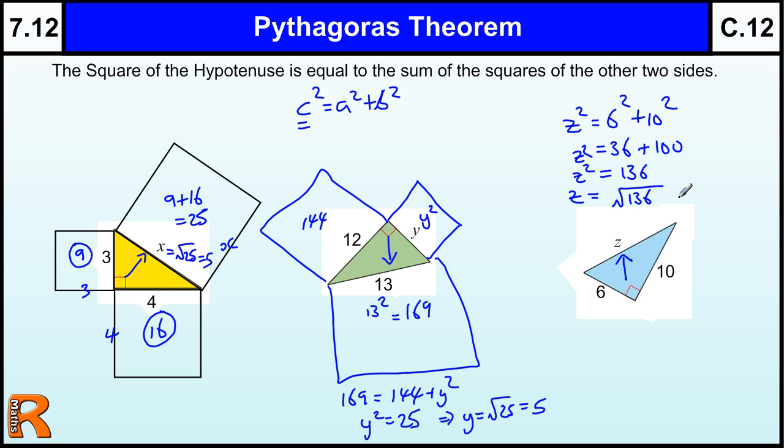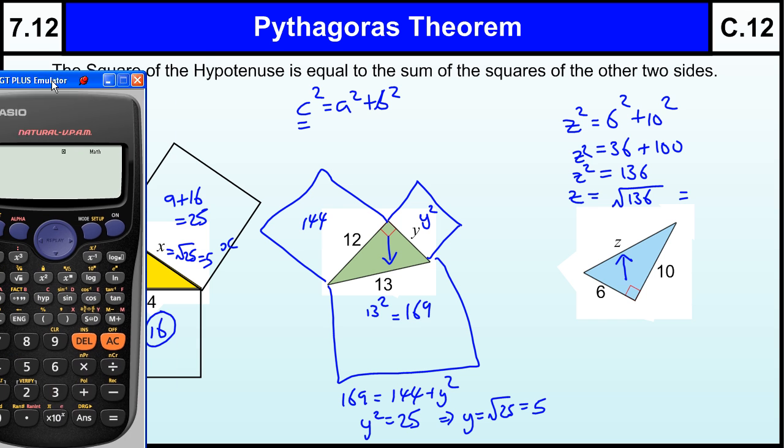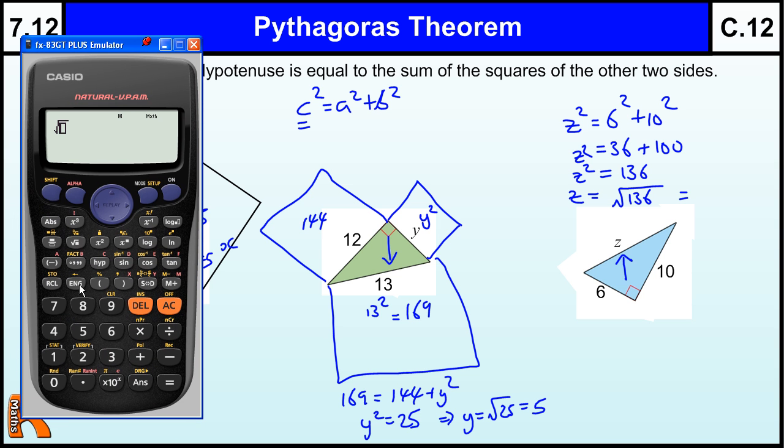So z equals, let's bring the calculator in, square root of 136, and that on this calculator gives you another square root, but if you press the s to d button, that will give you a decimal, 11.73 decimal, one decimal place, or three significant figures, or you could write out the whole answer that's on the calculator if you want.